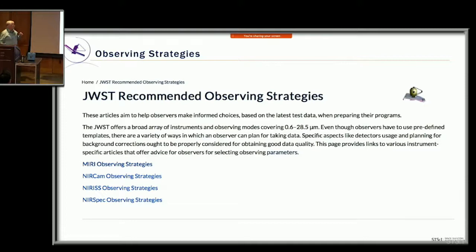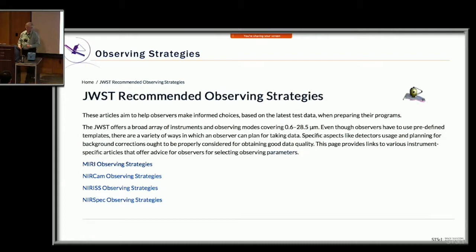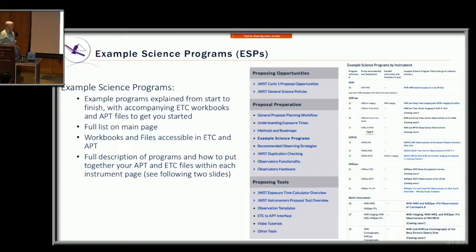Some pages pull together information in one place instead of having to sort through the navigation. For instance, there's a page called Observing Strategies that points you to each of the instrument observing strategies pages right from one spot in JDocs. That's helpful — we roll up information into one page so you can find it quickly.